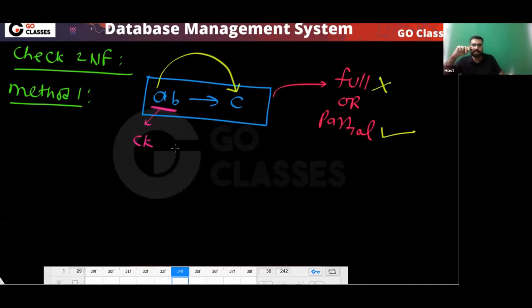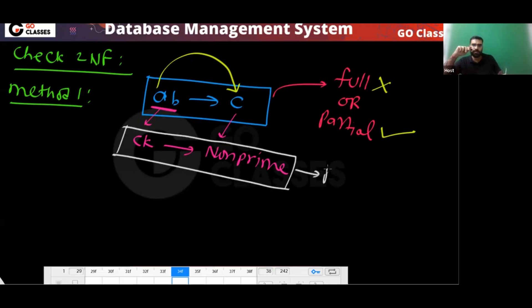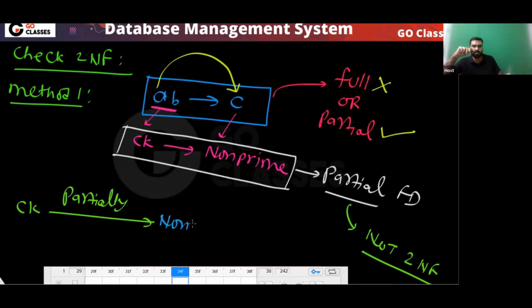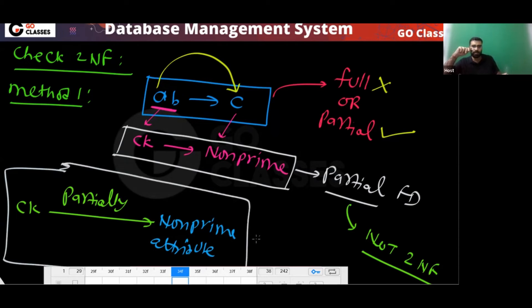Notice that AB is a candidate key and C is a non-prime attribute, and the FD AB→C is partial. So the candidate key is partially determining a non-prime attribute. This means the relation is not in 2NF. You can also apply the formal method: if there exists a partial FD from a candidate key to a non-prime attribute, it is not in 2NF.